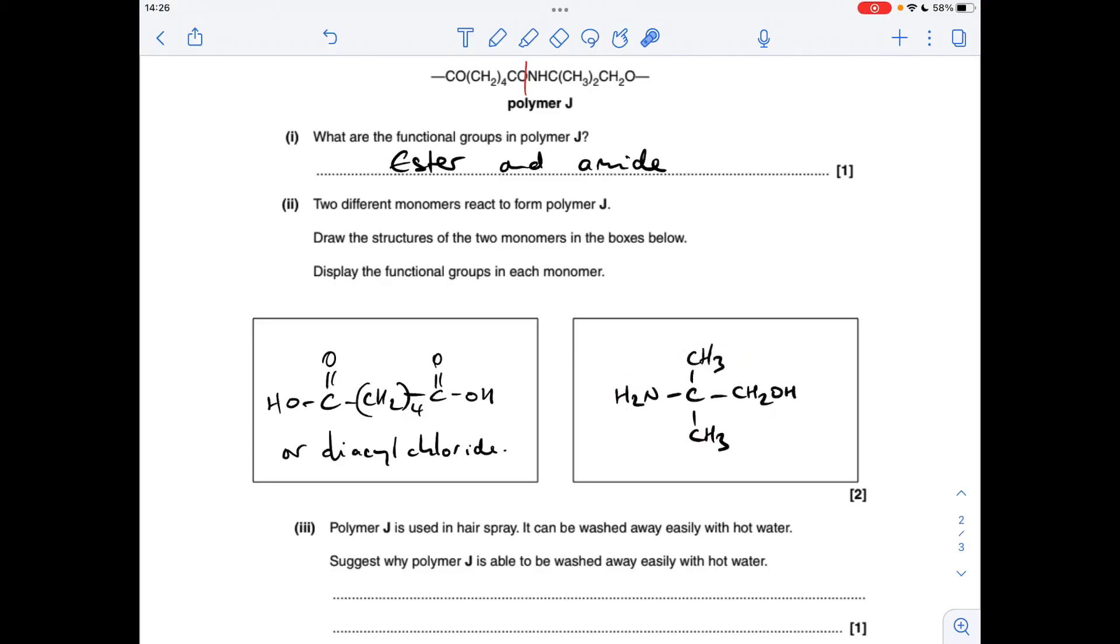And the last question: suggest why polymer J is able to be washed away easily with hot water. Well, it's got this group here—this amide group—and it's also got ester groups as well, and both of them can be hydrolyzed.